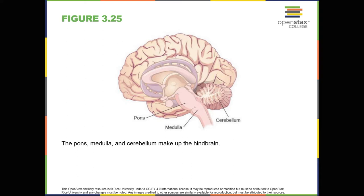The medulla controls the automatic processes of the autonomic nervous system, such as breathing, blood pressure, and heart rate. The word pons literally means bridge, and as the name suggests, the pons serves to connect the brain and the spinal cord. It is also involved in regulating brain activity during sleep. The medulla, pons, and midbrain together are known as the brain stem.